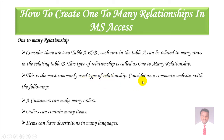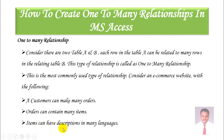Consider an e-commerce customer's website with the following criteria. A customer can make many orders — it's a one-to-many relationship. An order can contain many items — it's a one-to-many relationship. Items can have descriptions in many languages — it is a one-to-many relationship.